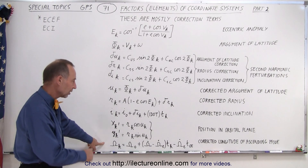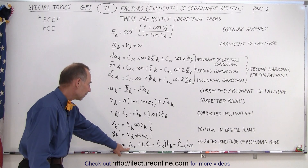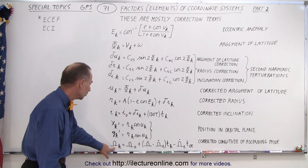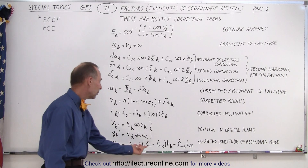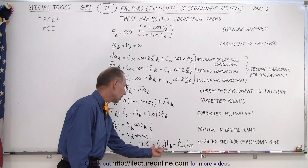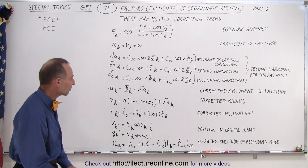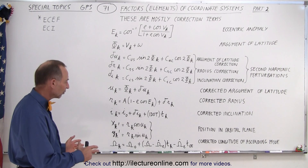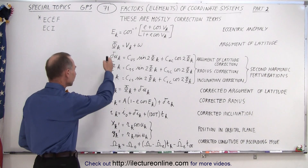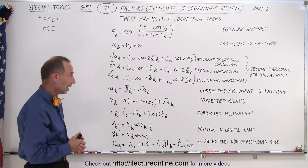Finally, we also have what we call the corrected longitude of ascending node. This is the corrected value, where we take into account something that depends on the correct time positioning and also a value relative to the time of the ephemeris. There are always these exact calculations that need to be made to find these precise position parameters of the satellite.